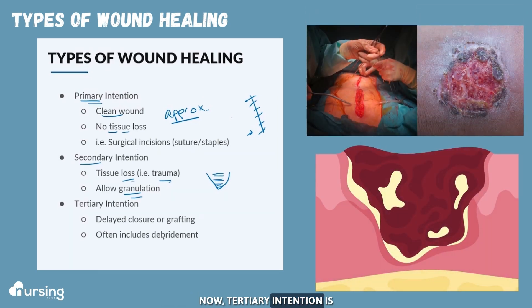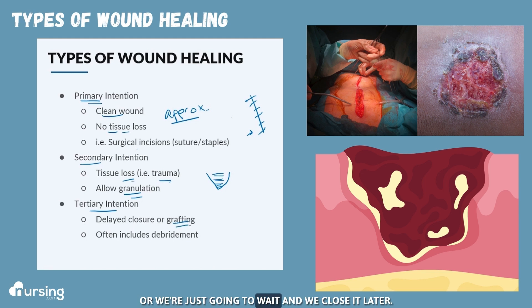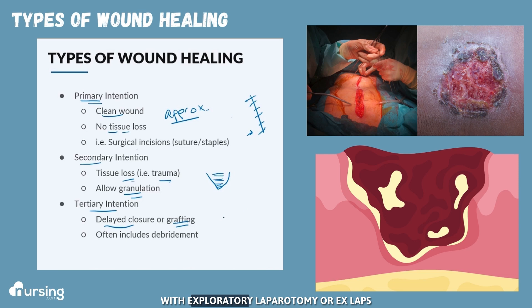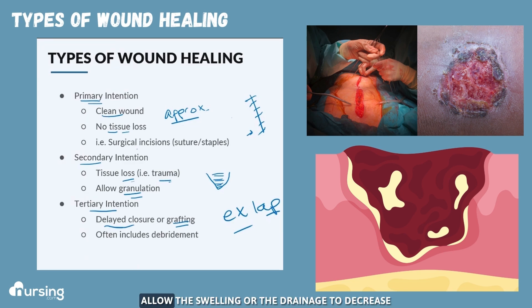Tertiary intention is where we actually intend to leave the wound open. We either do this because we're going to provide a graft to close it, or we're just going to wait and close it later. This actually happens a lot with exploratory laparotomies, or ex-laps, where we literally open up a patient's abdomen and then just leave it open to allow the swelling or the drainage to decrease before we close the abdomen altogether.